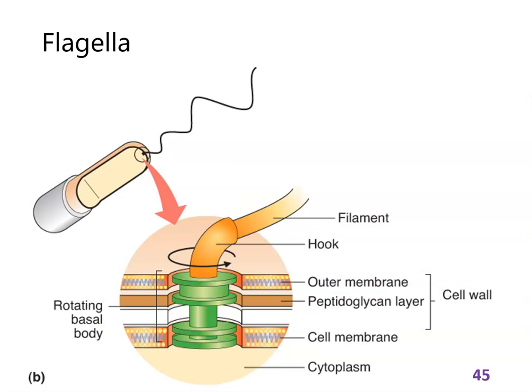Flagella are a thing that bacteria have. These are the little propellers that they use to swim — kind of stiff protein corkscrews that get spun very quickly. The idea is they push the cell through the water. The trick here is that bacteria are so small that they experience water very differently from the way we do.